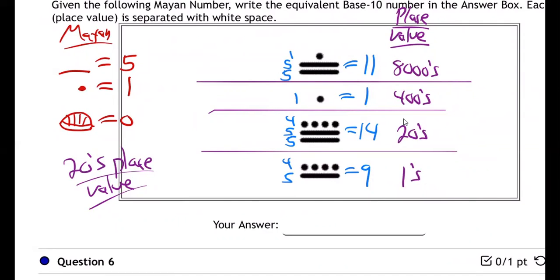Now remember, we multiply these, right? We always multiply the number by the place value. That's how place value works. 11 times 8,000, use your calculator - 88,000.